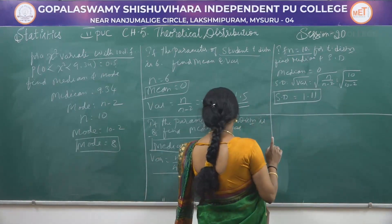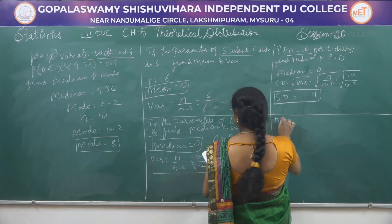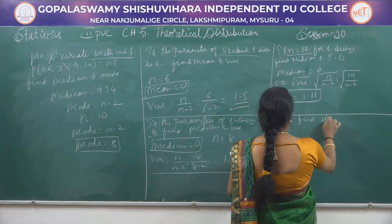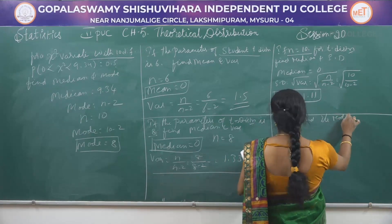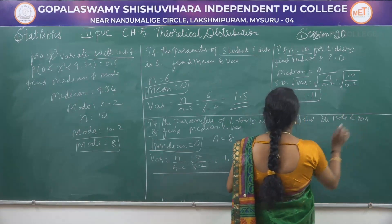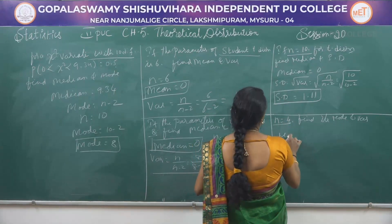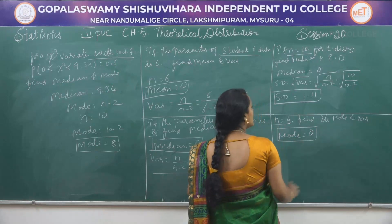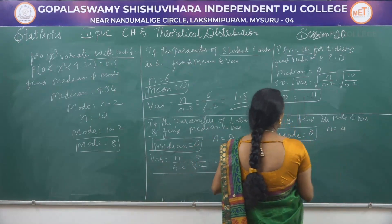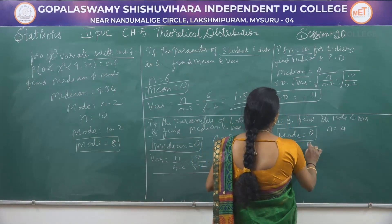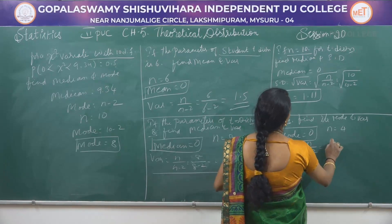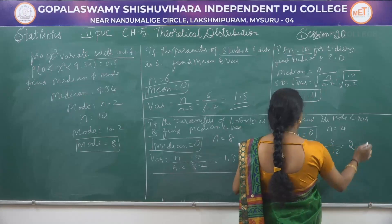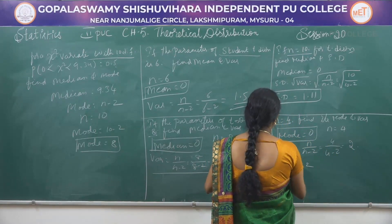Problem: With n = 4 in t-distribution, find mode and variance. Mode = 0. Variance = n / (n − 2) = 4 / (4 − 2) = 4 / 2 = 2.